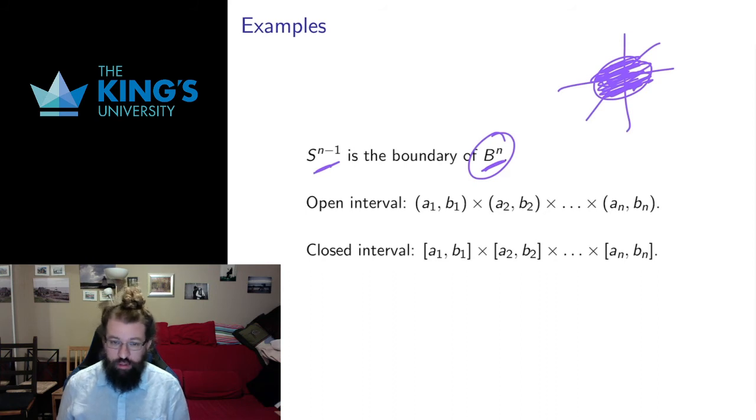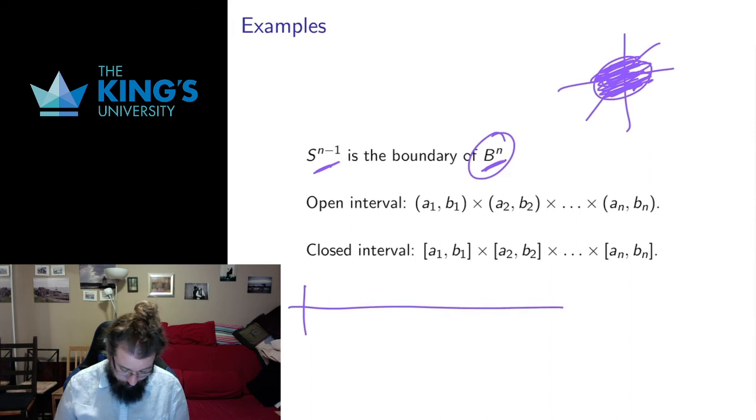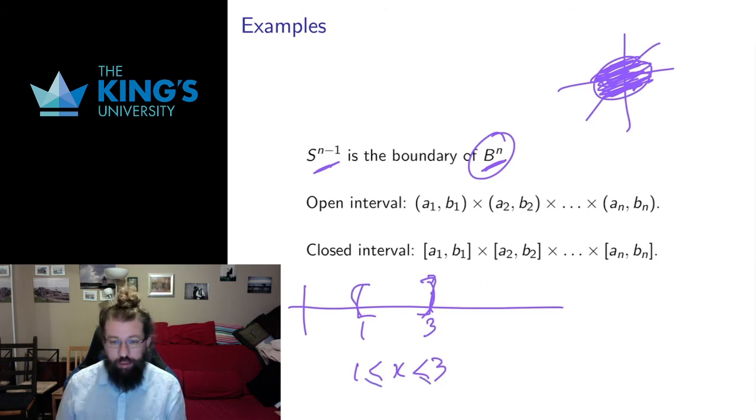We also have the notion of intervals. So on the real number line, we could have the open interval from 1 to 3, that would be 1 < x < 3, or we could have the closed interval from 1 to 3, that would be 1 ≤ x ≤ 3. And those give us open and closed sets on the real number line. We can extend these to open and closed intervals in R^n as well.